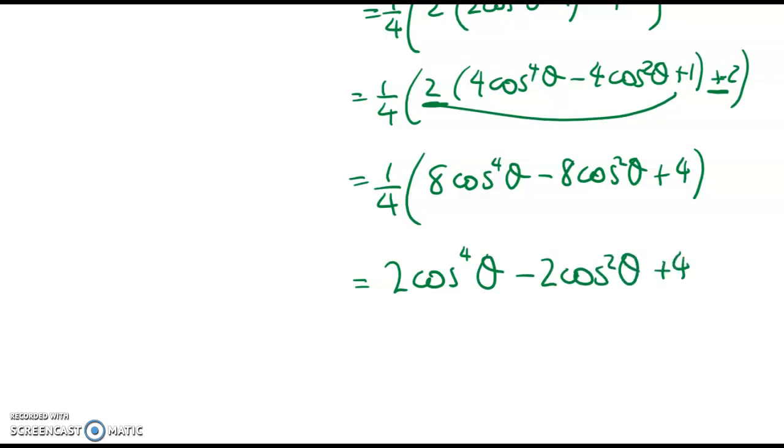Right, so if we just take a look at that now, let's think about where we're trying to get to. We want to have sine to the power of 4 theta plus cos to the power of 4 theta. So we've got some of that already in here.